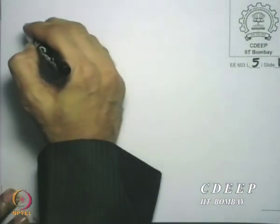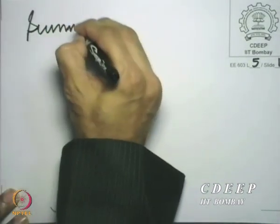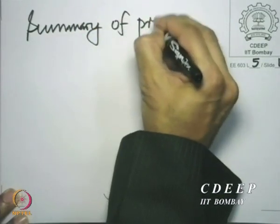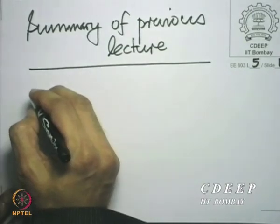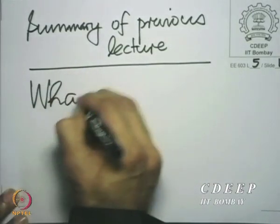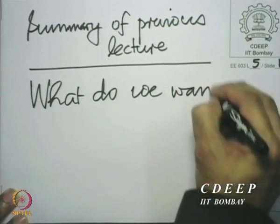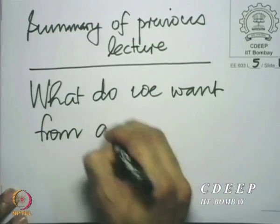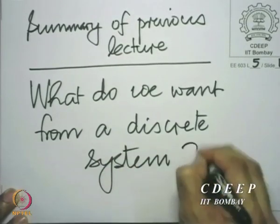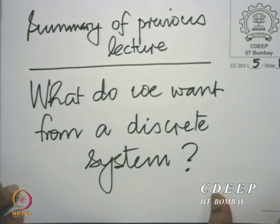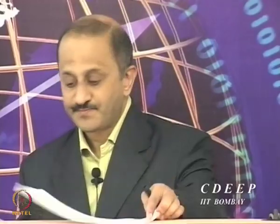This is the summary of the previous lecture. The theme was: what do we want from a system? And the answer was completely captured by the following three experiments. Experiment 1: we have a discrete system.